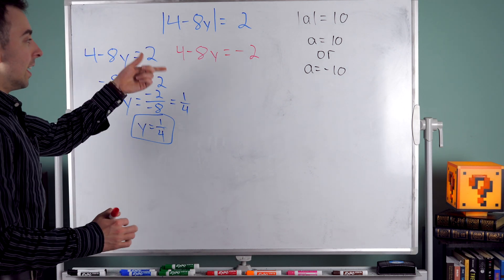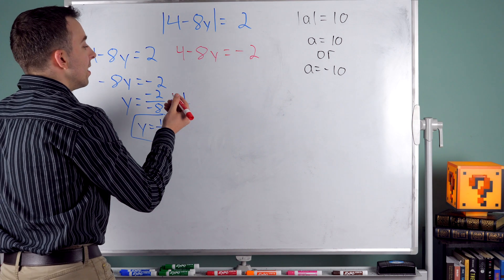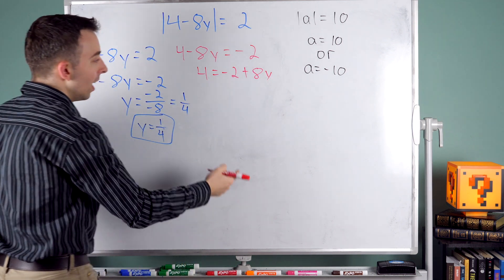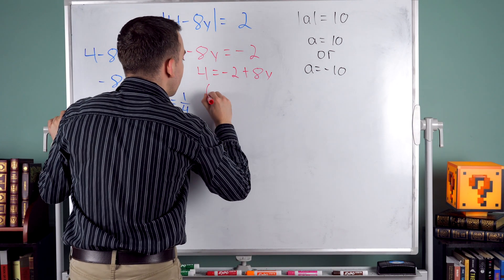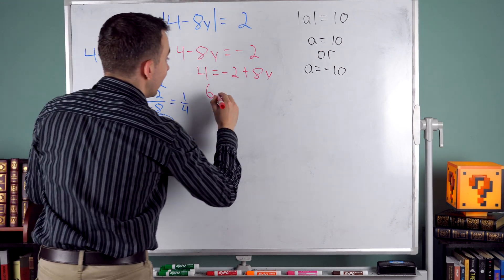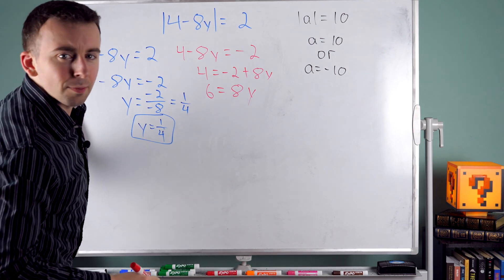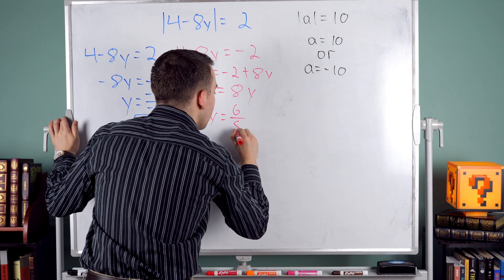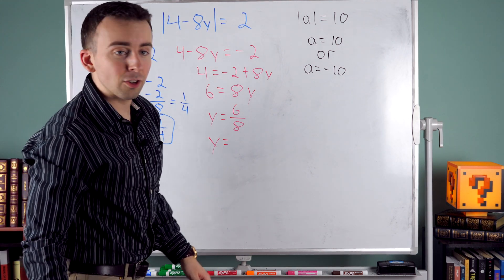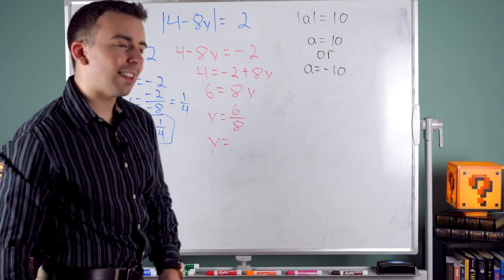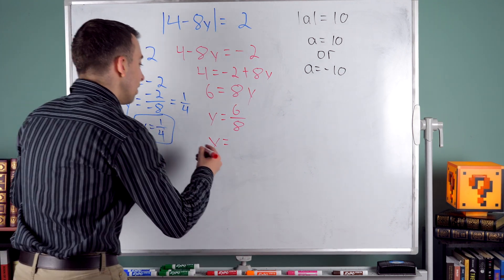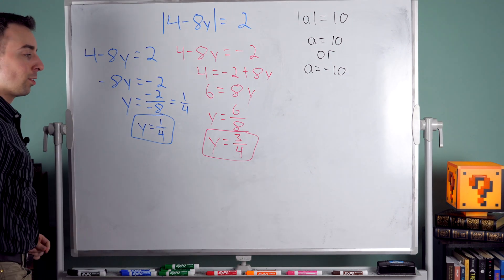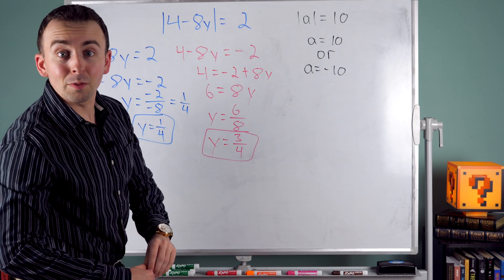Now solve the second equation: 4 minus 8y equals negative 2. Add 8y to both sides: 4 equals negative 2 plus 8y. Then add 2 to both sides: 6 equals 8y. Divide both sides by 8: y equals 6 over 8, which reduces to 3 fourths. That is our other solution. These are the two solutions to this absolute value equation.